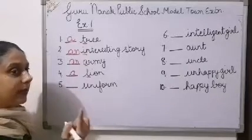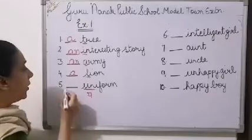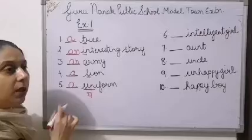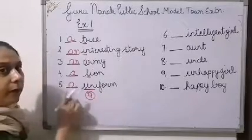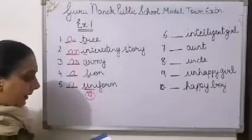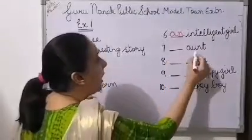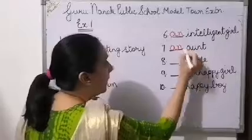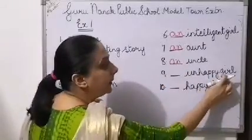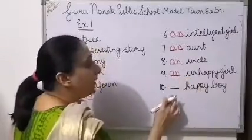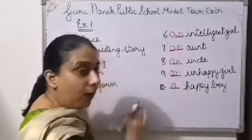Fifth: dash uniform. Now here there is a twist I explained earlier — uniform has a 'yer' sound, so we use A, not AN — a uniform. Similarly, a university. Sixth: an intelligent girl — I is a vowel sound, so AN. Seventh: an aunt — vowel sound, AN. Eighth: an uncle — again a vowel sound, AN. Ninth: an unhappy girl — vowel sound, AN. Tenth: a happy boy — H is a consonant, not a vowel, so we use A — a happy boy.